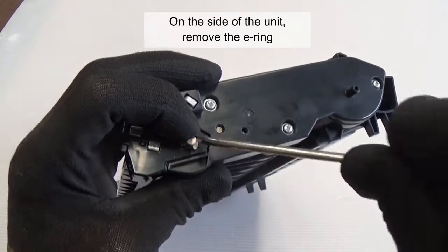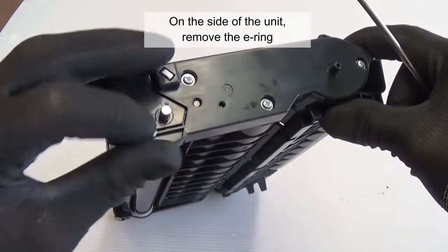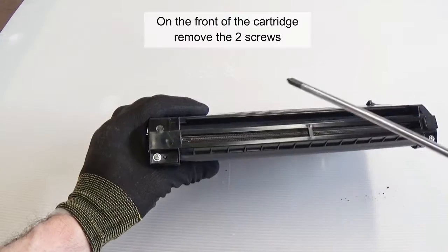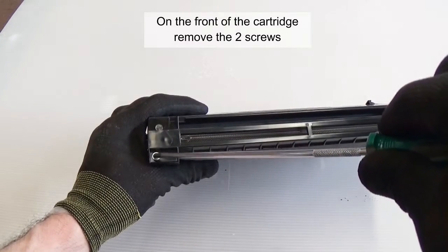On the side of the drum unit, remove the E-ring. On the front of the cartridge, remove the two screws.